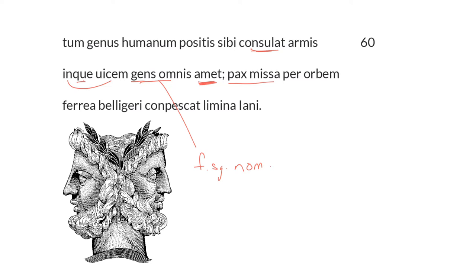Pax missa, when peace has been sent throughout the world, per orbem. Pax, also a feminine singular nominative. And missa, the adjective modifying it, this is the participle from mitto mittere, the third conjugation verb. So it's the perfect passive participle. And remember that participles are adjectives. This is a verbal adjective. When peace has been sent throughout the world